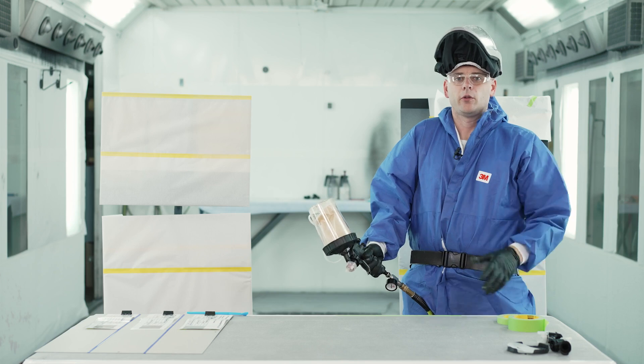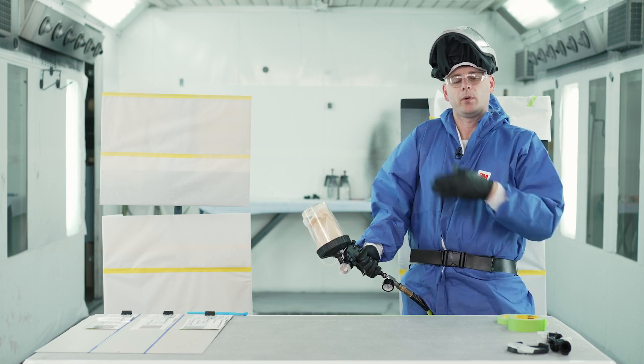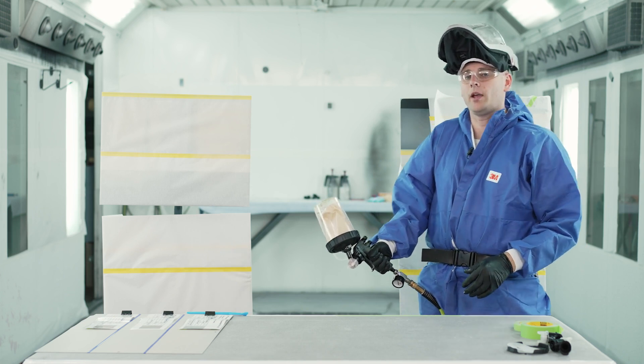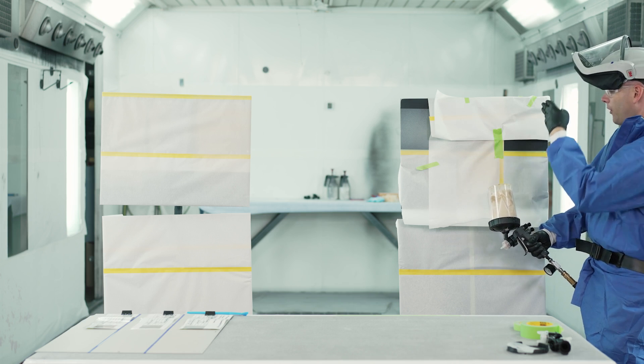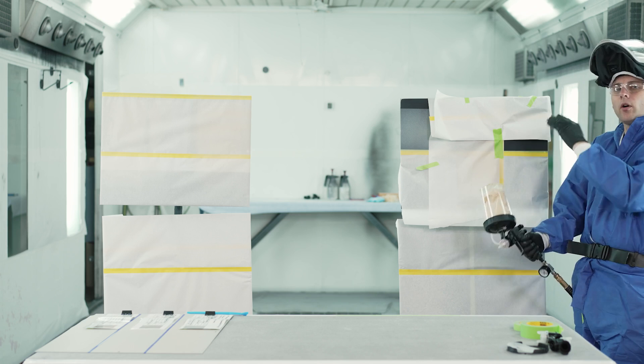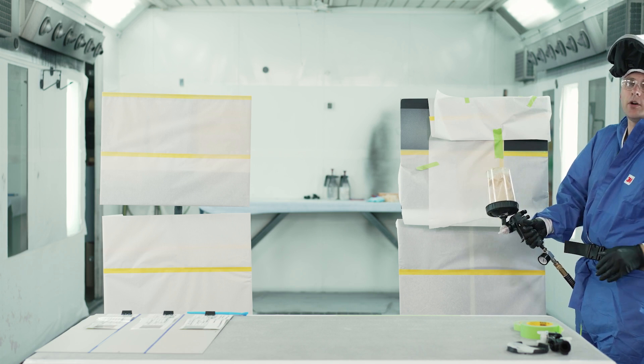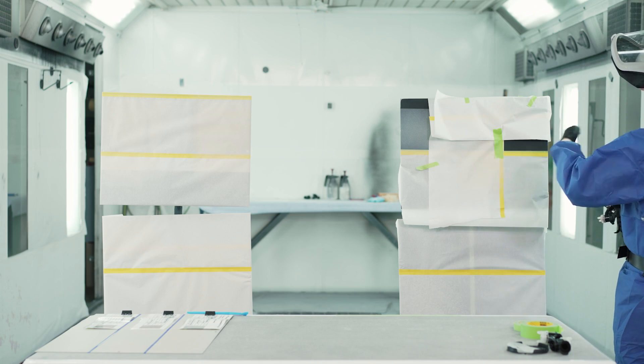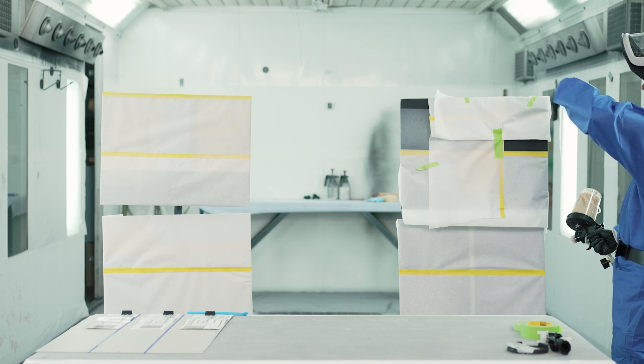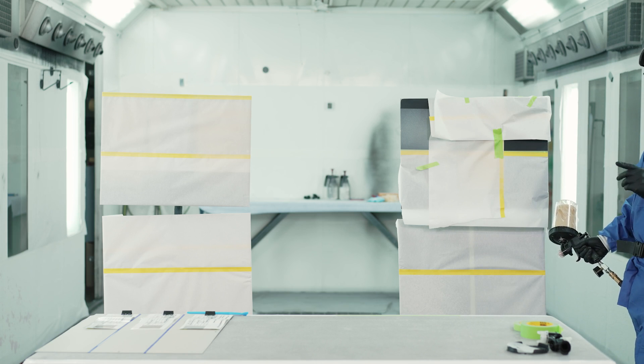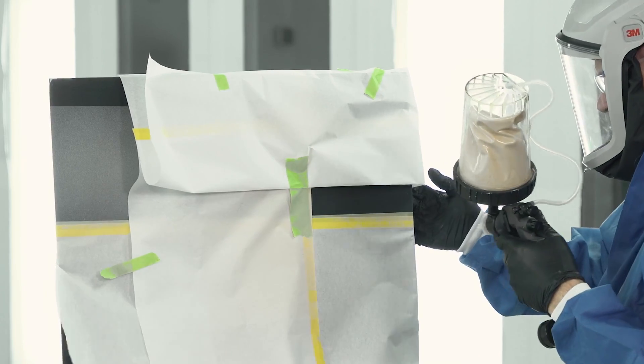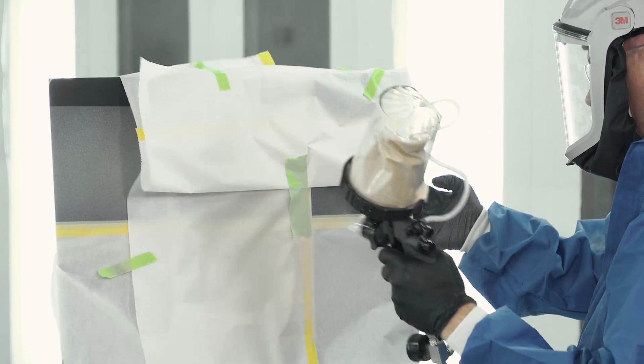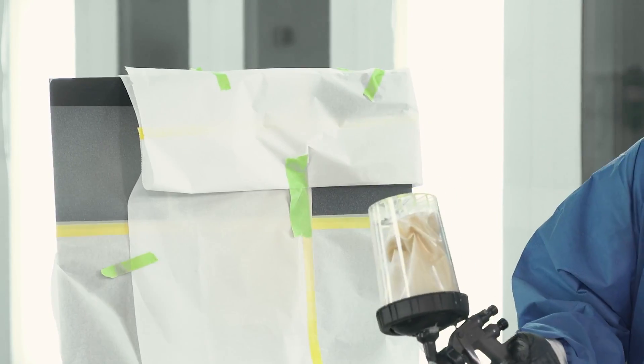And now we're ready to spray. So we want to spray this in a similar way as we did our last smooth transition with the foam tape. We want to spray from either straight on or slightly above. The further down of an angle we spray from, the more that this texture coating is going to get up underneath that masking. So we're going to spray from pretty much straight on to a slight downward angle, and you'll see how smooth this transition will be.